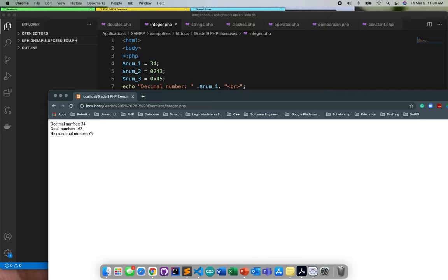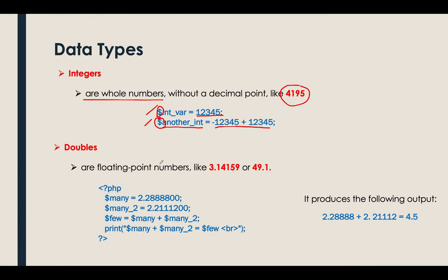So that's for the integer. Let's proceed to discussing doubles. For doubles or float, these are actually floating point numbers, meaning they contain decimal points.